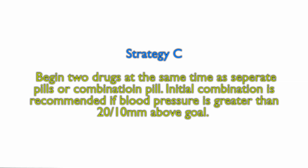Strategy C is to begin two drugs at the same time, either as separate pills or in a combination pill. Initial combination therapy is recommended if the BP is greater than 20 mmHg above the systolic goal or 10 mmHg above the diastolic goal.